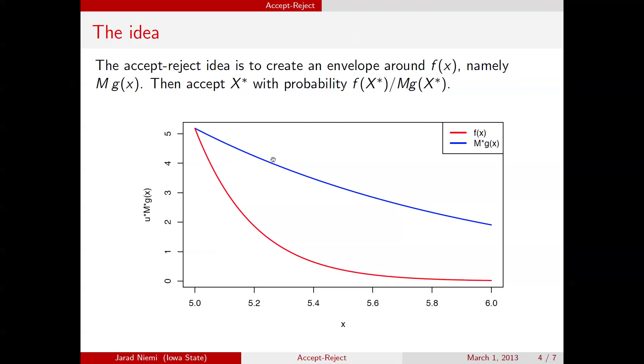So in this picture, we have f. This is the density that we're trying to draw samples from. And then in blue, we have m times g of x.